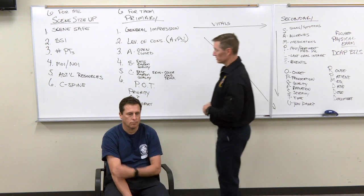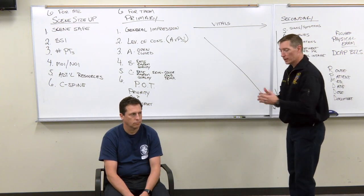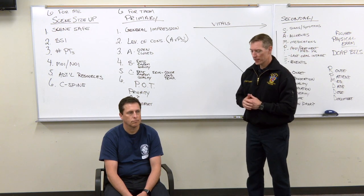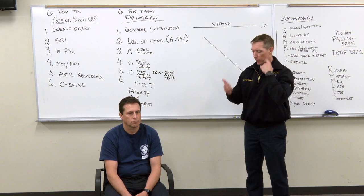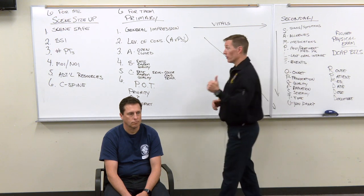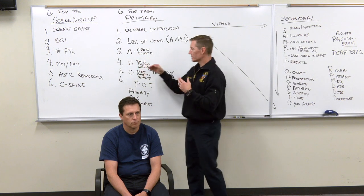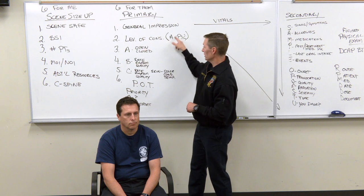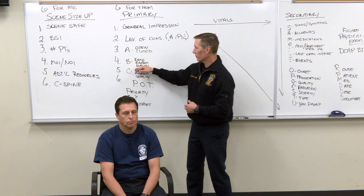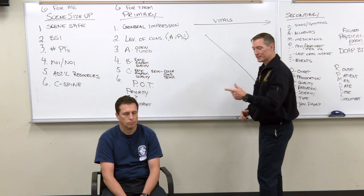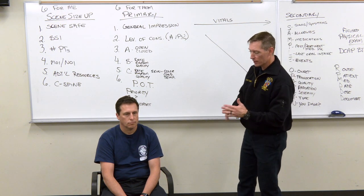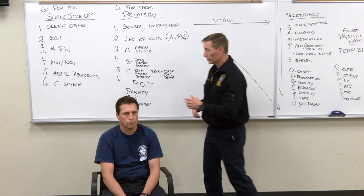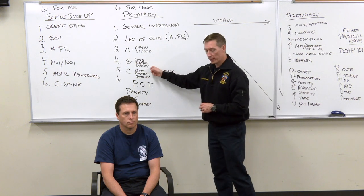Moving into primary assessment: as I approach, I form my general impression — an adult male sitting upright in a chair, not in any great distress. I establish rapport: 'Hello sir, I'm with the fire department, I understand you're having some chest pain today, can you tell me what's going on?' He answers appropriately, telling me he was mowing his lawn when he got chest pain and came in to call 911. This automatically answers some questions: his level of consciousness is alert, and I know his airway is open because he spoke to me. I then briefly assess his breathing — rate, rhythm, and quality.